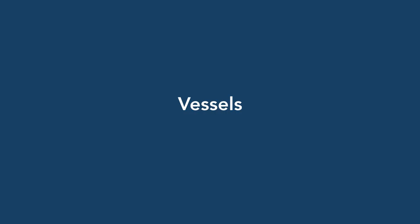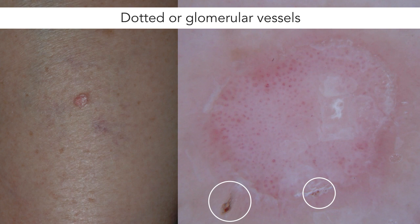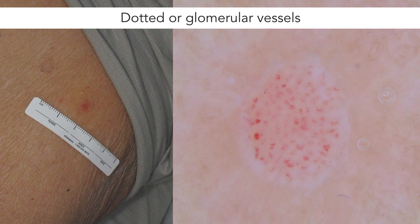Now let's take a look at the vascular structures we can expect to find in porokeratosis. In erythematous lesions such as this one, it's not unusual to find dotted or glomerular vessels, which are commonly regularly distributed as seen here. Here's another case with dotted or glomerular vessels in the central area, with some erosions and blood spots along the keratin rim. Here's one more example in which the vessels can be more easily identified as glomerular.